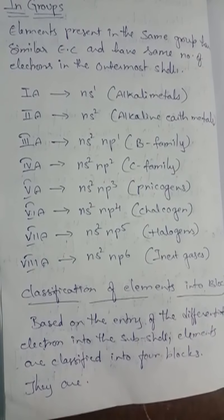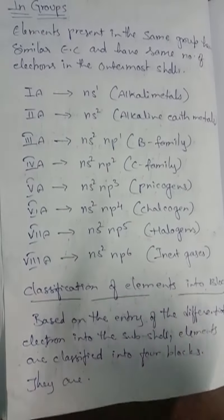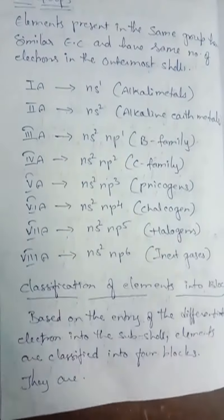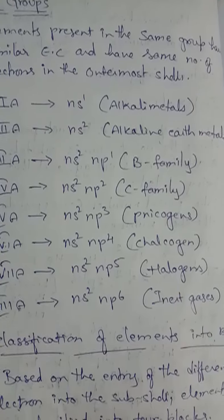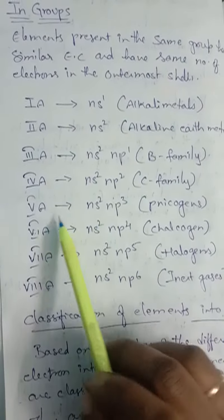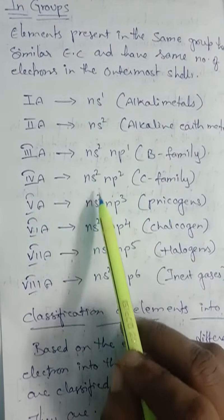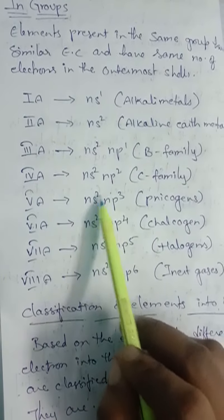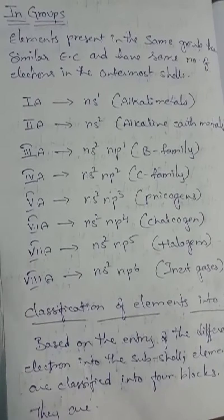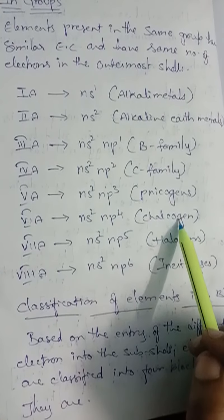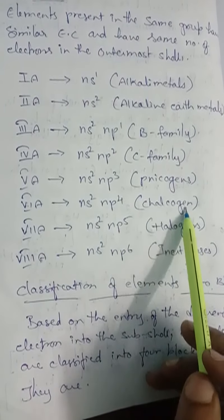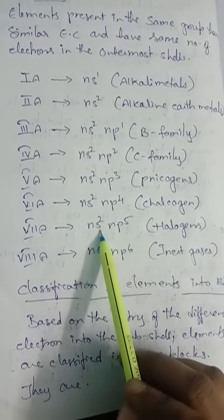Group 4A, or group 14 elements, have the general electronic configuration ns2, np2. Group 5A elements have configuration ns2, np3 — two plus three gives a total of five outermost electrons, so they belong to group 5A. These are also known as pnictogens. Group 6A elements have configuration ns2, np4 and are known as chalcogens. Group 7A elements have configuration ns2, np5 and are known as halogens.